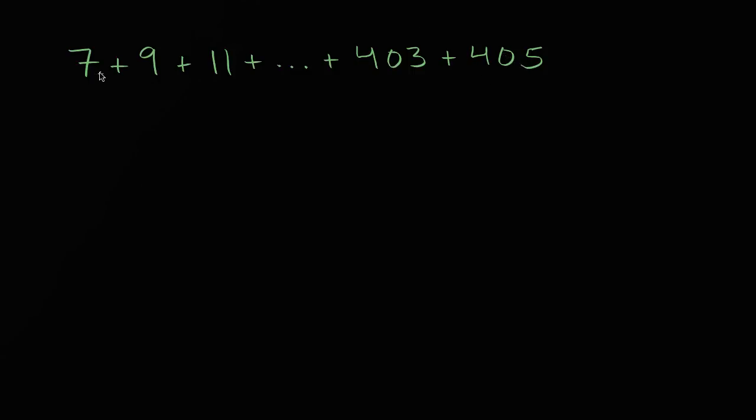So first let's just think about what's going on here. How can we think about what happens at each successive term? So we're at 7, then we're going to 9, then we're going to 11. It looks like we're adding 2 every time. So it looks like this is an arithmetic series. We add 2, and then we add 2 again, and we're going to keep adding 2 all the way until we get to 405.